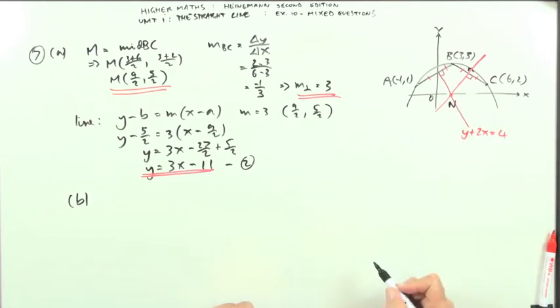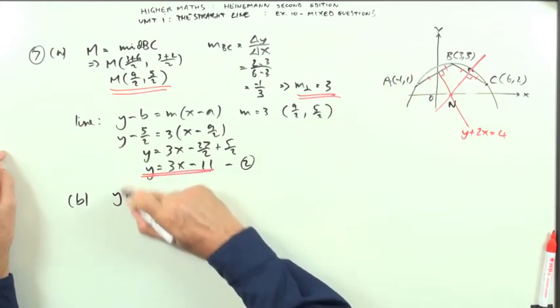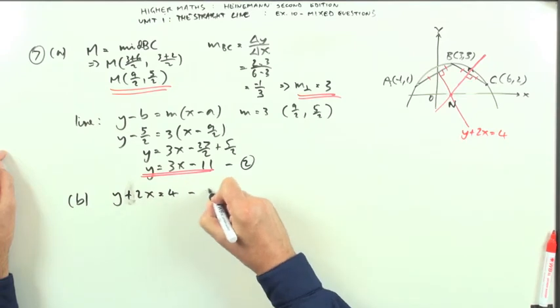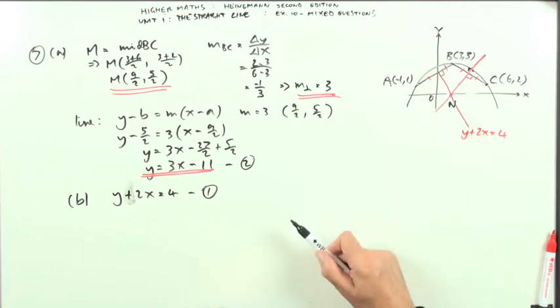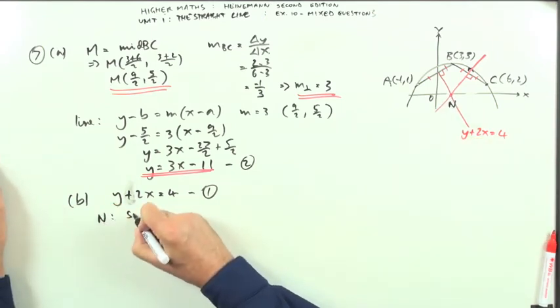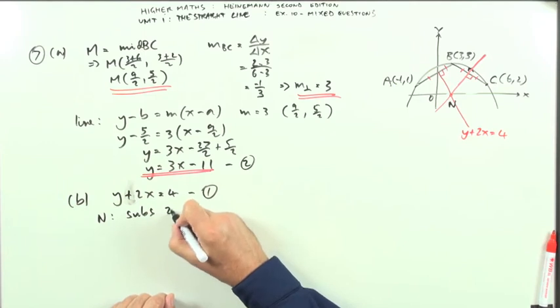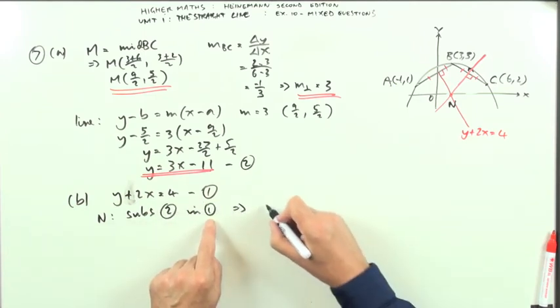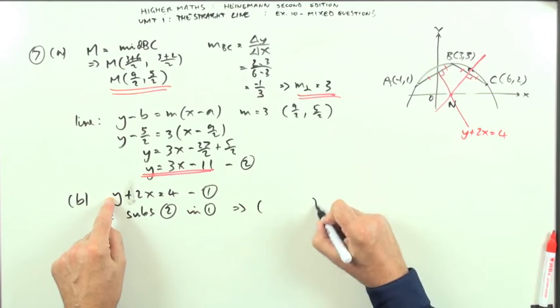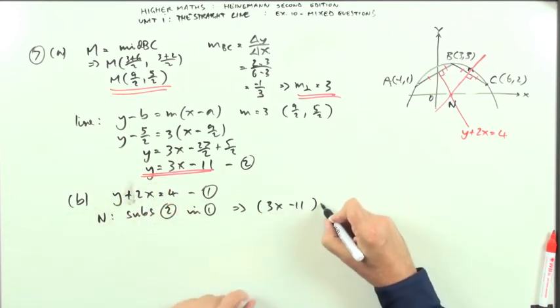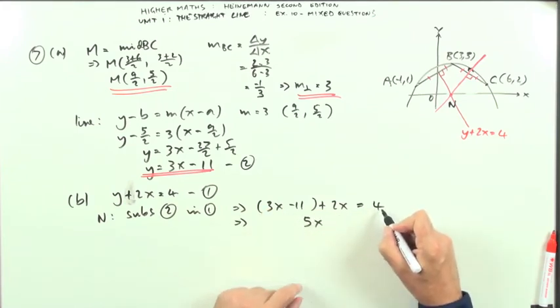We'll call the center N. The first chord had perpendicular bisector y plus 2x equals 4, call that equation 1. The second has y equals 3x minus 11. Where they intersect is the centre. I'll substitute equation 2 into equation 1. Instead of y, I'll write 3x minus 11, then continue: plus 2x equals 4. That's 5x minus 11 equals 4.